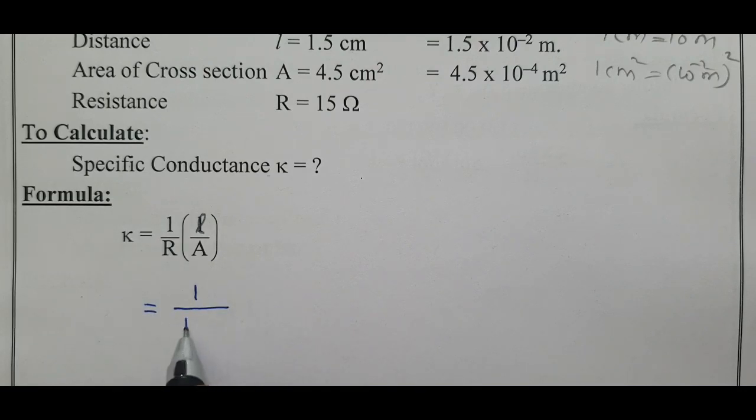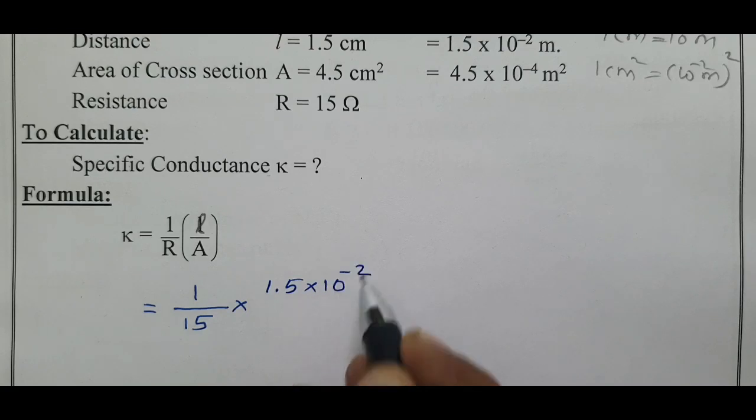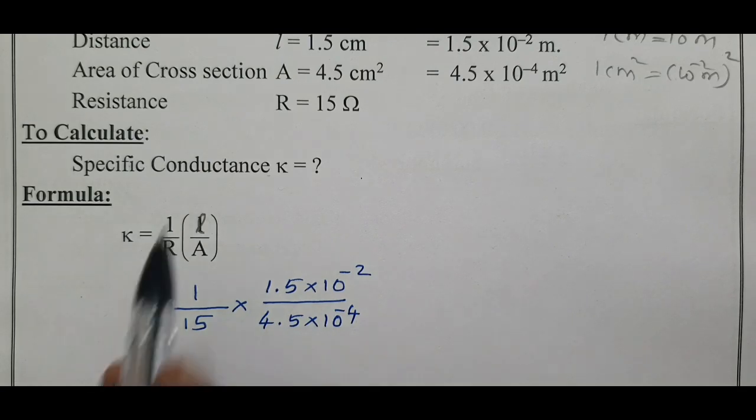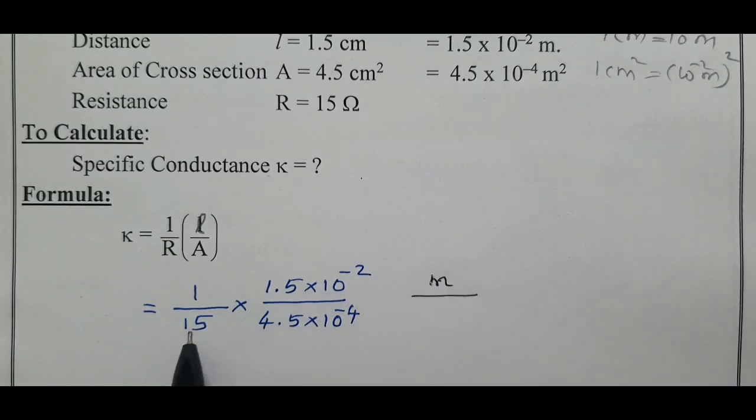L distance between two electrodes after converting into meter is 1.5 into 10 power minus 2, divided by 4.5 into 10 power minus 4. What is the unit? Length distance unit is meter divided by R in ohm and A in meter square.